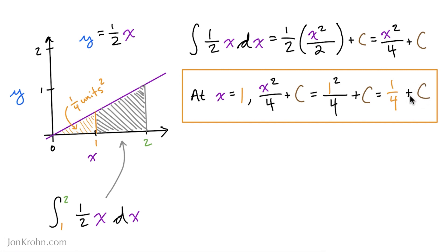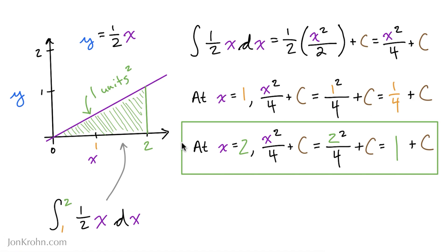The next step is to find the area of this bigger area under the curve. So to do that, we drop in 2 for x. And again, I've just copied and pasted our indefinite integral here. We drop 2 in. 2 squared is 4. 4 divided by 4 is 1. And yes, that plus c, that unknown constant, is obviously still around.